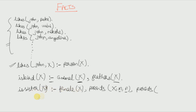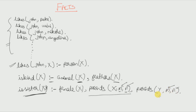So X is sister of Y if X is female, parents of X are M and F, and parents of Y are also M and F. Here M and F are variables, but once they are instantiated in the first parents clause, the same values for M and F will also apply to the second parents clause. If X's mother is M and father is F, Y must have the same M and F, otherwise the rule won't succeed.